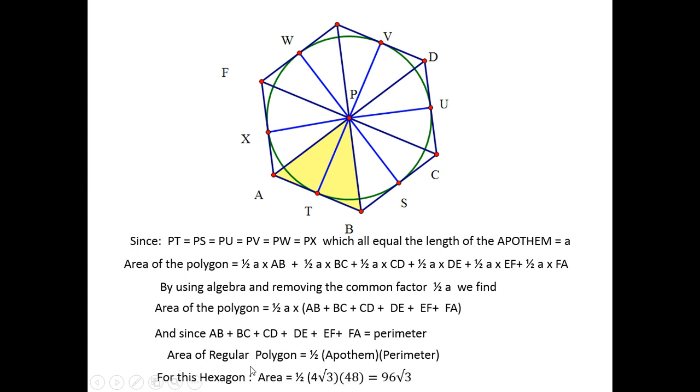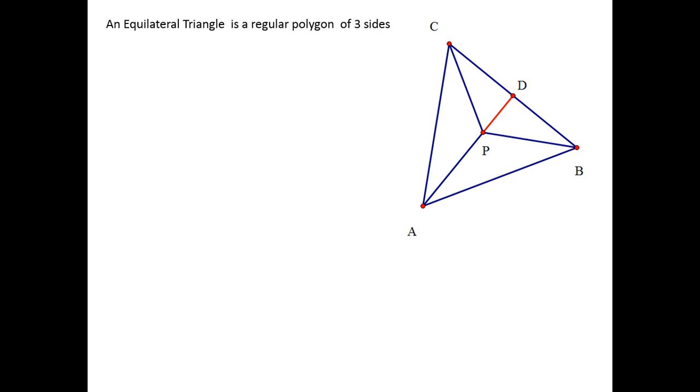We'll take a look at another problem. Here is an equilateral triangle. An equilateral triangle is a regular polygon. It's a regular polygon of three sides.